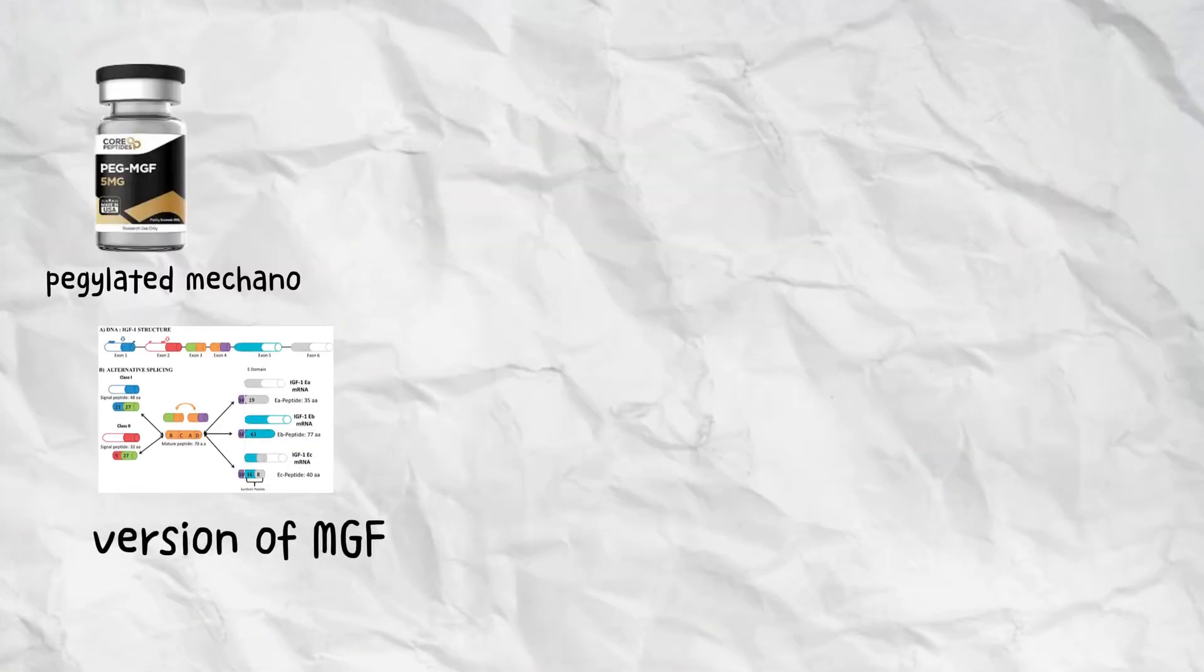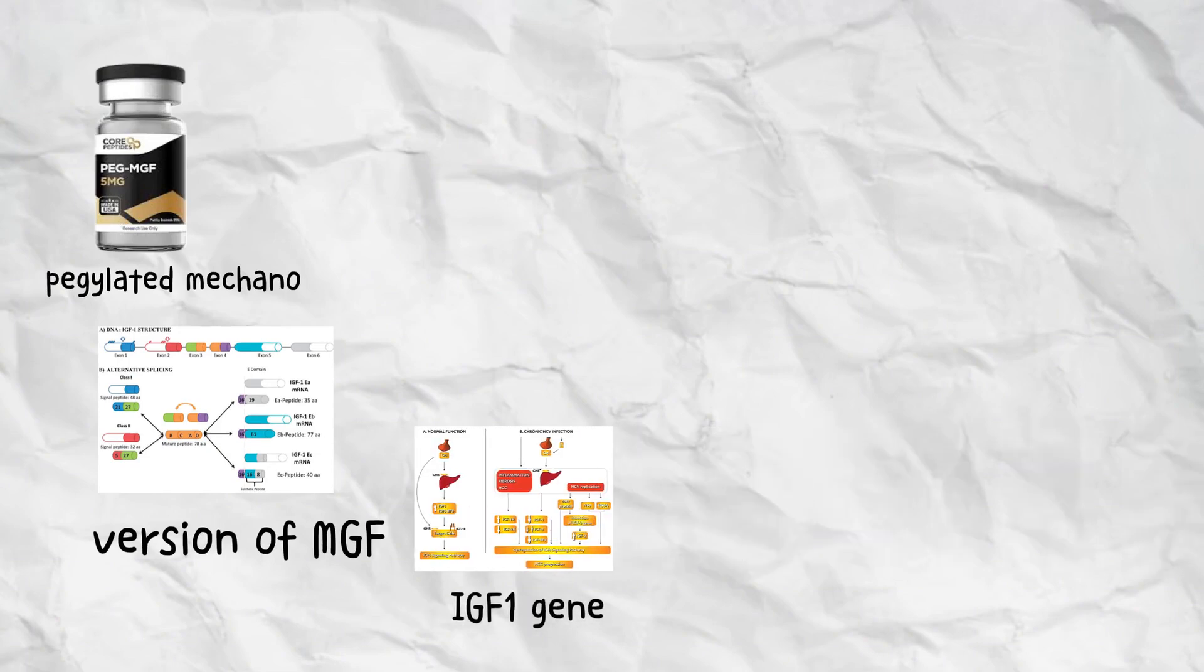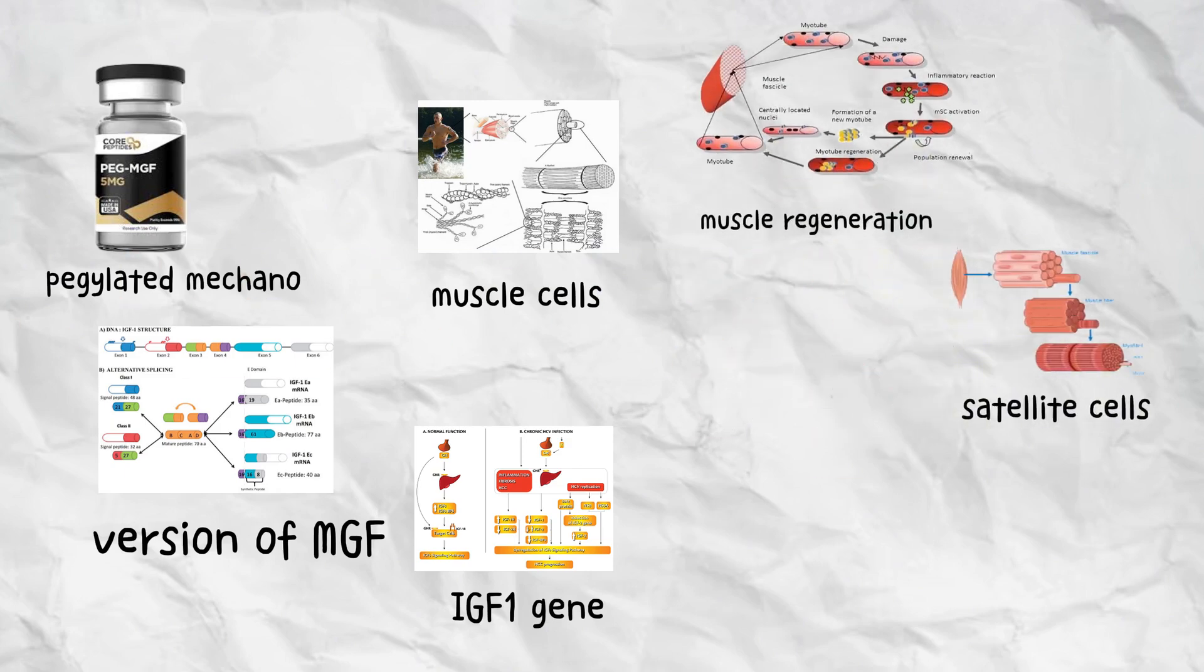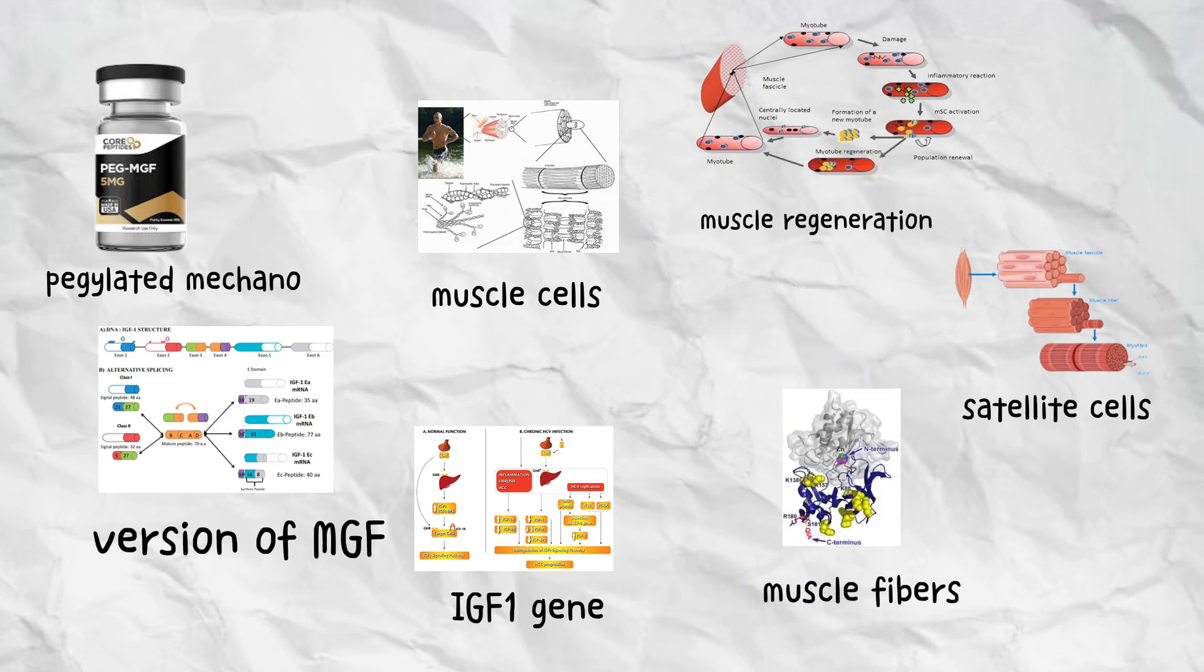PEG-MGF, pegylated mechano growth factor, is a synthetic, long-acting version of MGF, a splice variant of the IGF-1 gene that is released by muscle cells after intense exercise or injury. It plays a key role in muscle regeneration by activating satellite cells, the stem cells responsible for repairing and growing new muscle fibers. The pegylation process extends its half-life from minutes to several days, allowing for sustained anabolic activity.